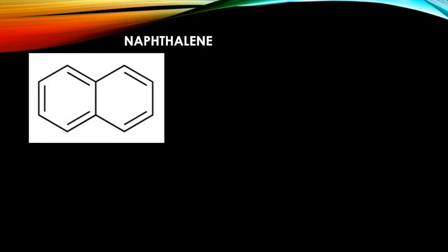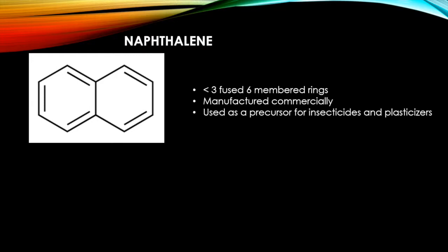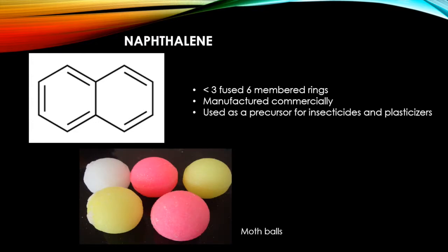One of the most common PAHs, which you might be familiar with, is naphthalene. It is one of the PAHs with less than three fused six-membered rings, and it's the only PAH that is made commercially. It's often used as a precursor for insecticides and plasticizers. It is also found in mothballs. Mothballs are used when storing articles susceptible to damage from mold or moth larvae. Naphthalene can cause a breakdown of red blood cells if inhaled or ingested in large amounts.